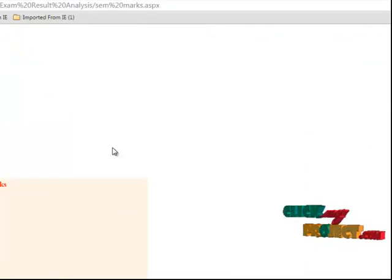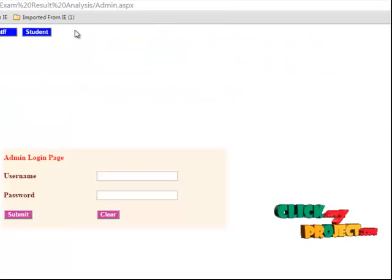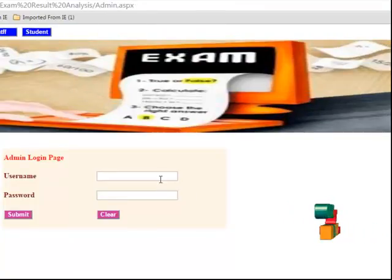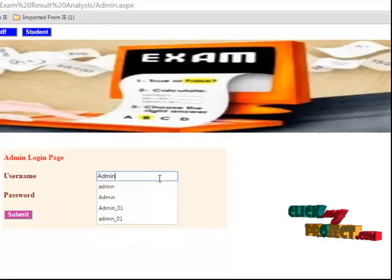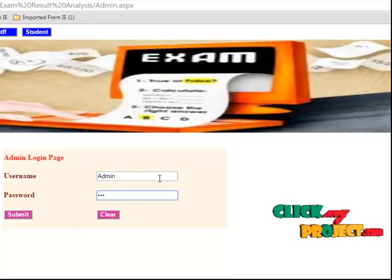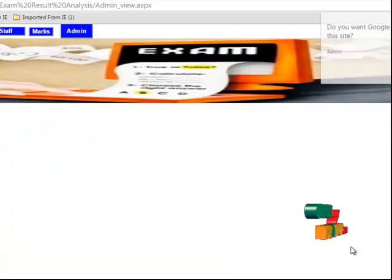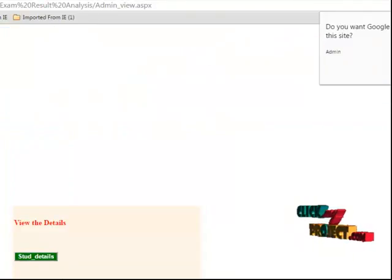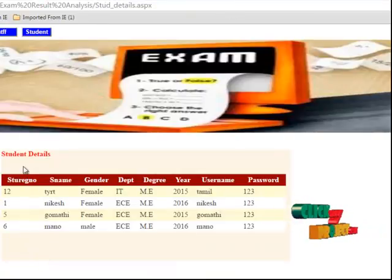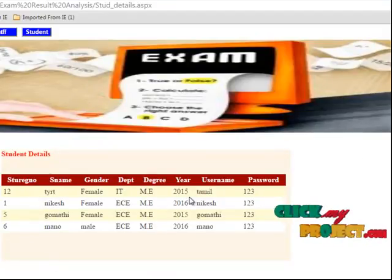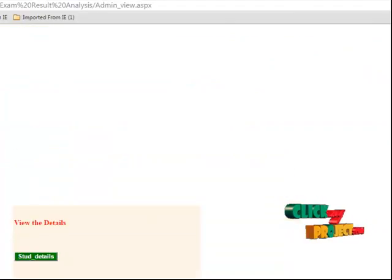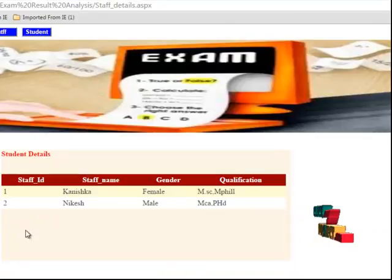Then admin, admin process. The admin login to go to the username and password. Then admin to put the password. Then submit the button. View the details available. Student details and staff details. Student reg number, name, gender, department degree, year, username and password. Then staff details also. Staff id, staff name, gender, qualification. The process is end.